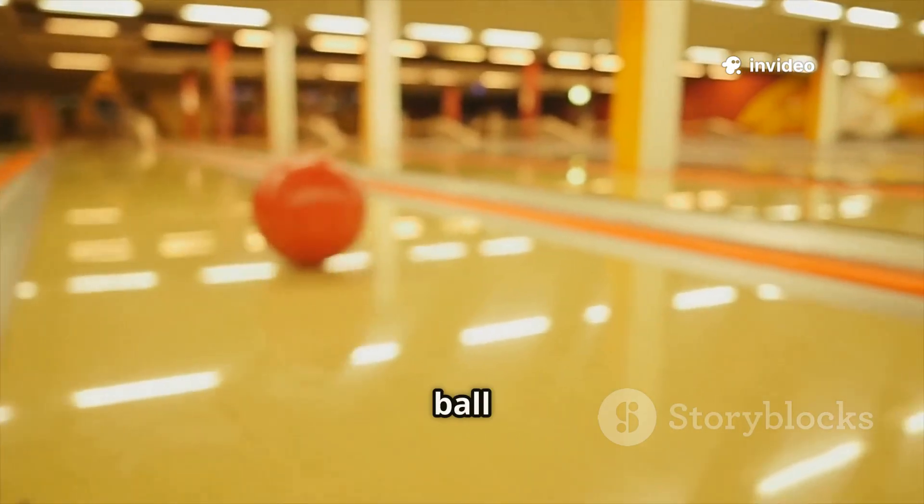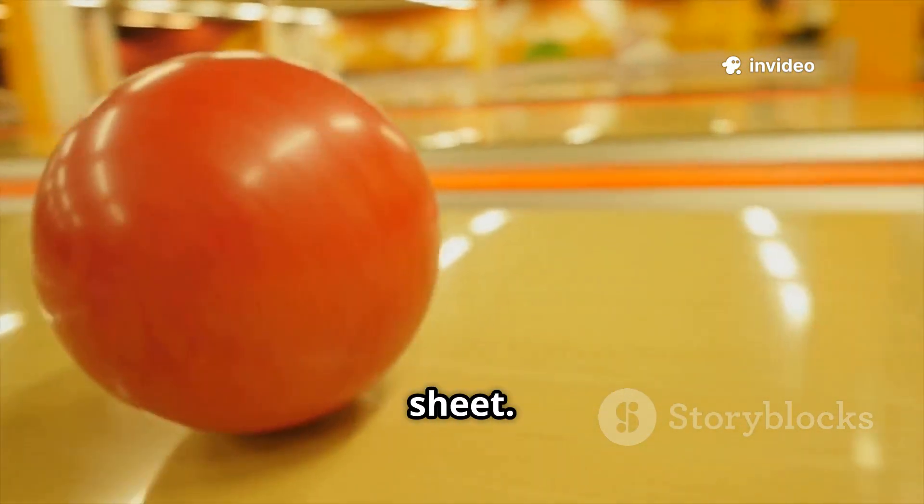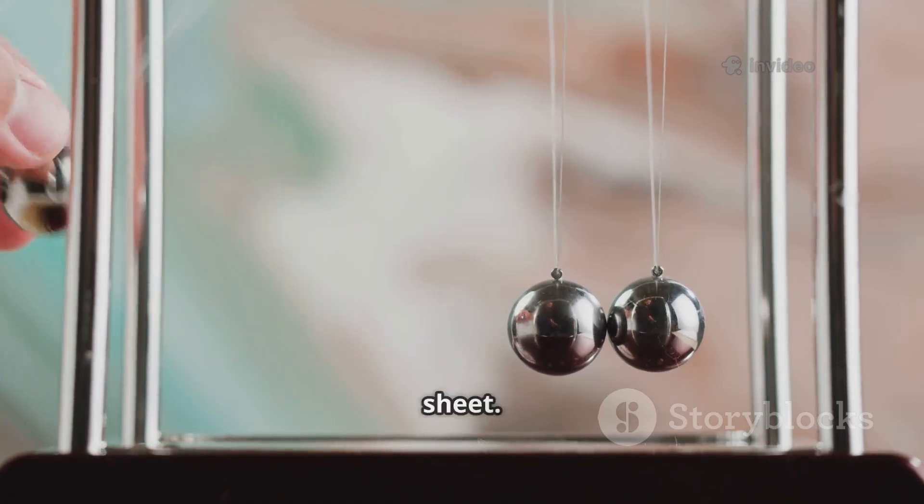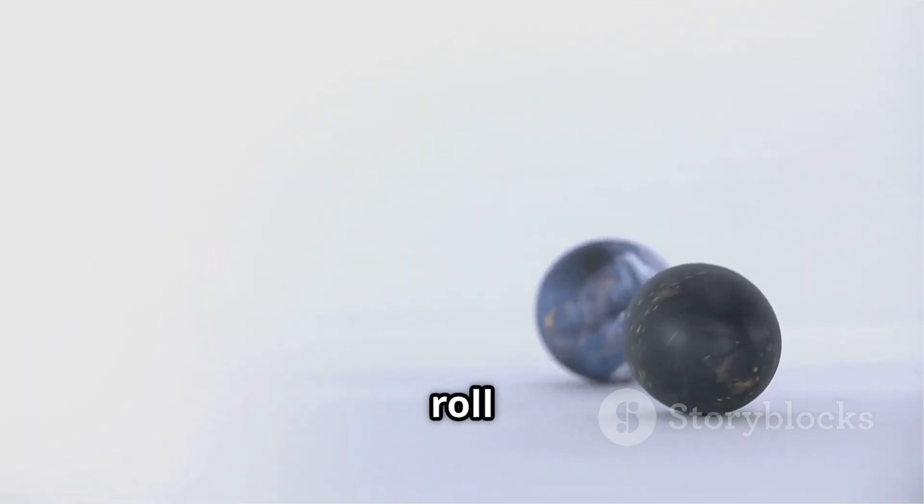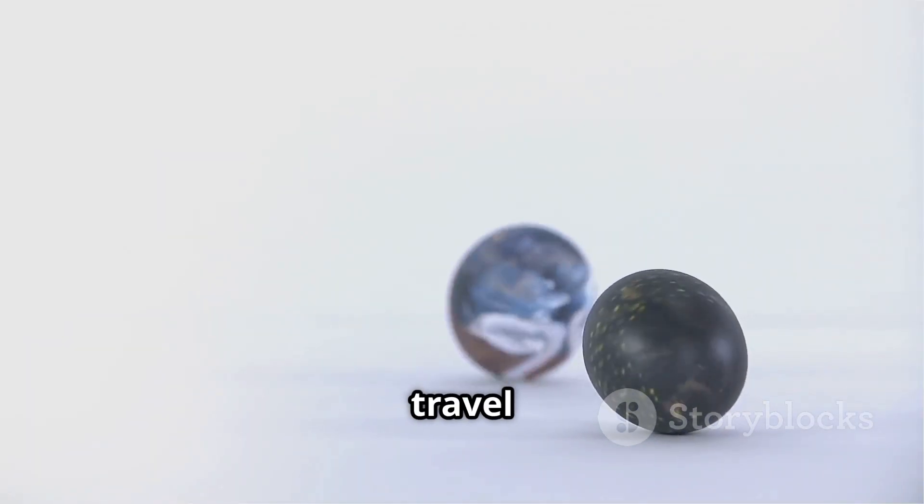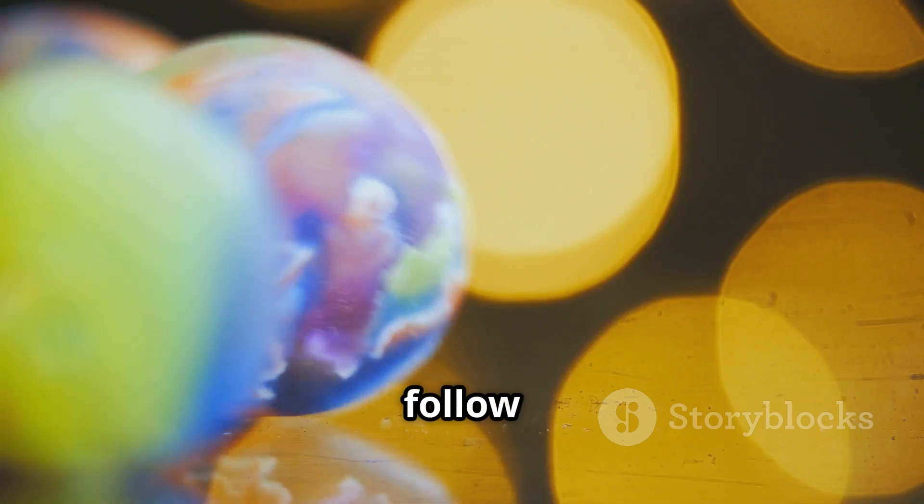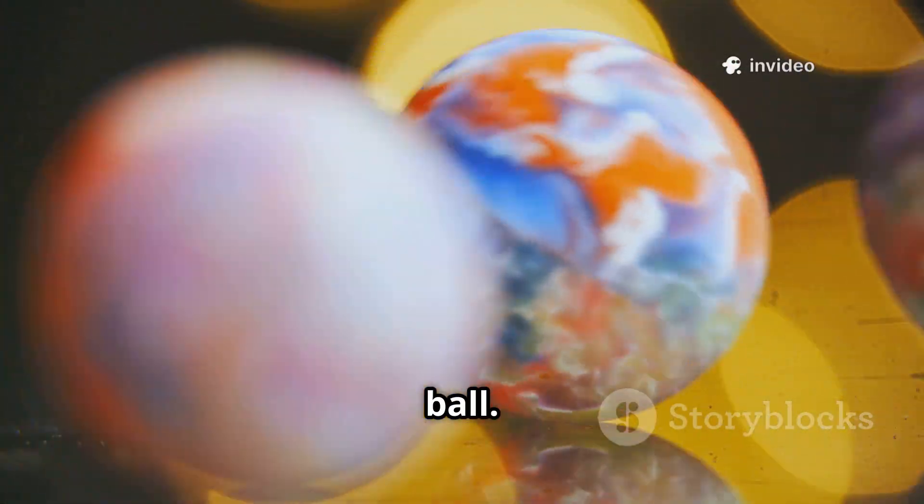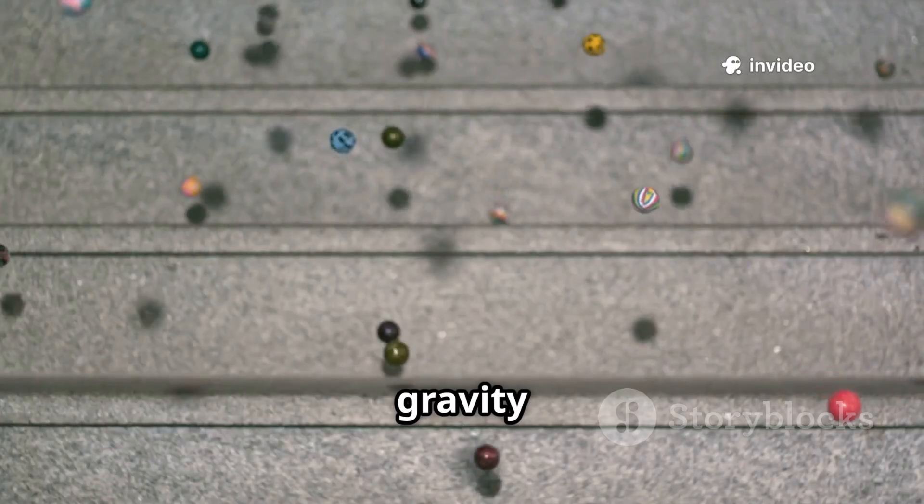Imagine placing a heavy bowling ball on a stretched rubber sheet. The ball makes a dip, a curve in the sheet. Now if you roll a small marble nearby, it won't travel in a straight line. It will follow the curve made by the bowling ball. That's a simple picture of how gravity works.